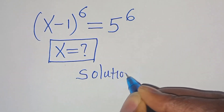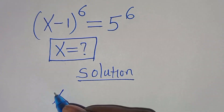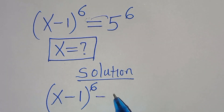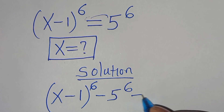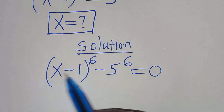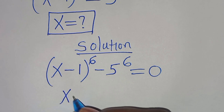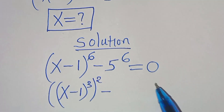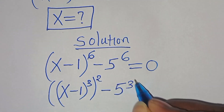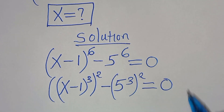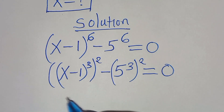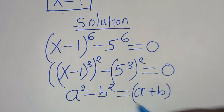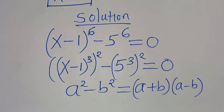We have (x minus 1) to the power of 6. Let's take 5 to the power of 6 to the other side, equal to 0. We can express (x minus 1)^6 as [(x minus 1)^3]^2, subtract 5^6, which we express as [5^3]^2, equals 0. This is in the form a² minus b², which factors as (a plus b)(a minus b).